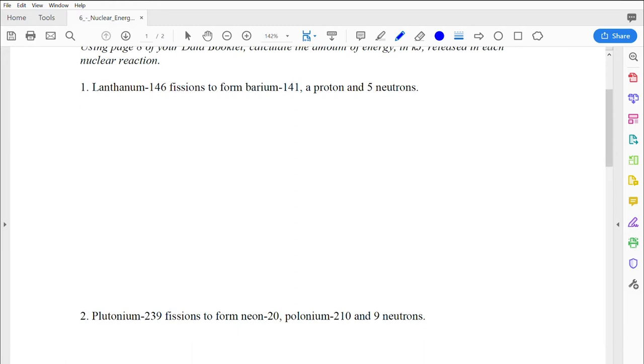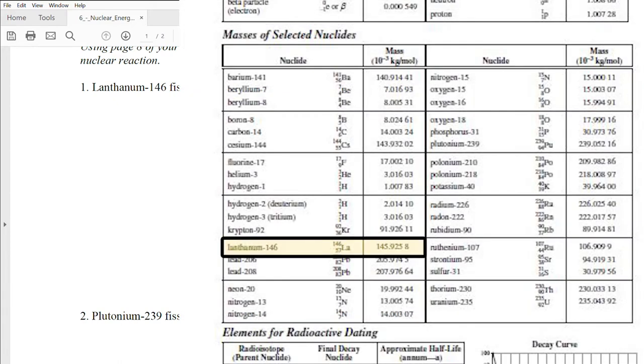We're going to work out how much energy is released in the first calculation in kilojoules. We're going to do lanthanum-146, which is going to fission to form barium-141, a proton, and five neutrons. To start, we're going to write out the formula, translating it from words into chemical symbols and nuclear isotope notation. Let's find lanthanum. There it is in the data sheet, left-hand side, and it is 146 on the top and 57 on the bottom, and then a big LA.